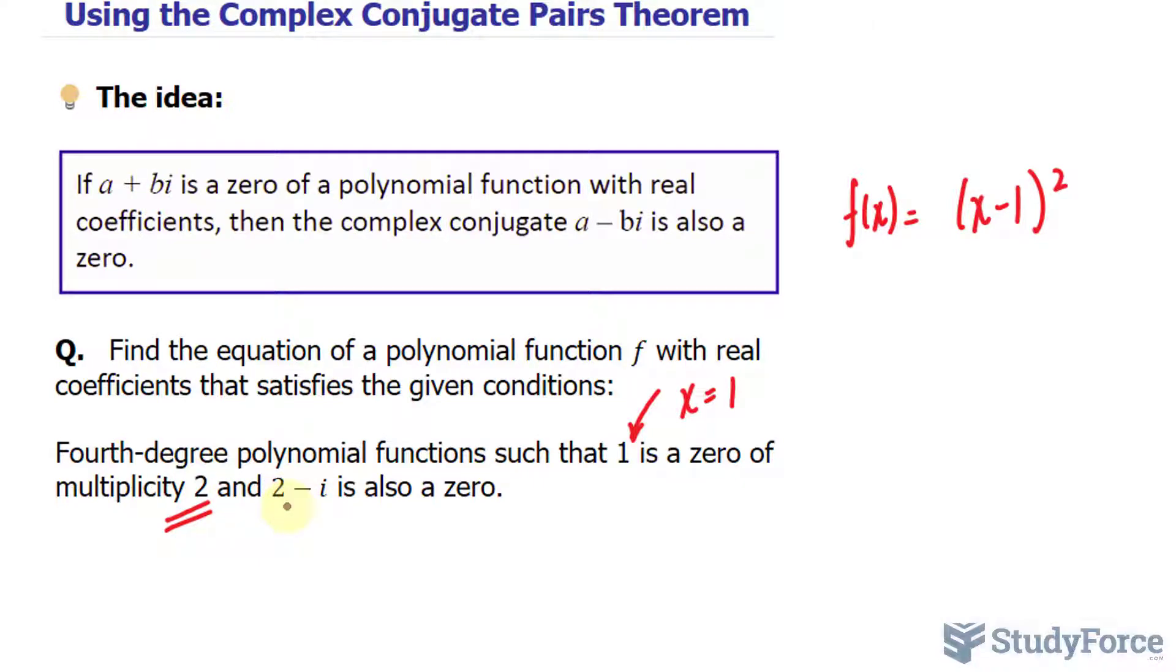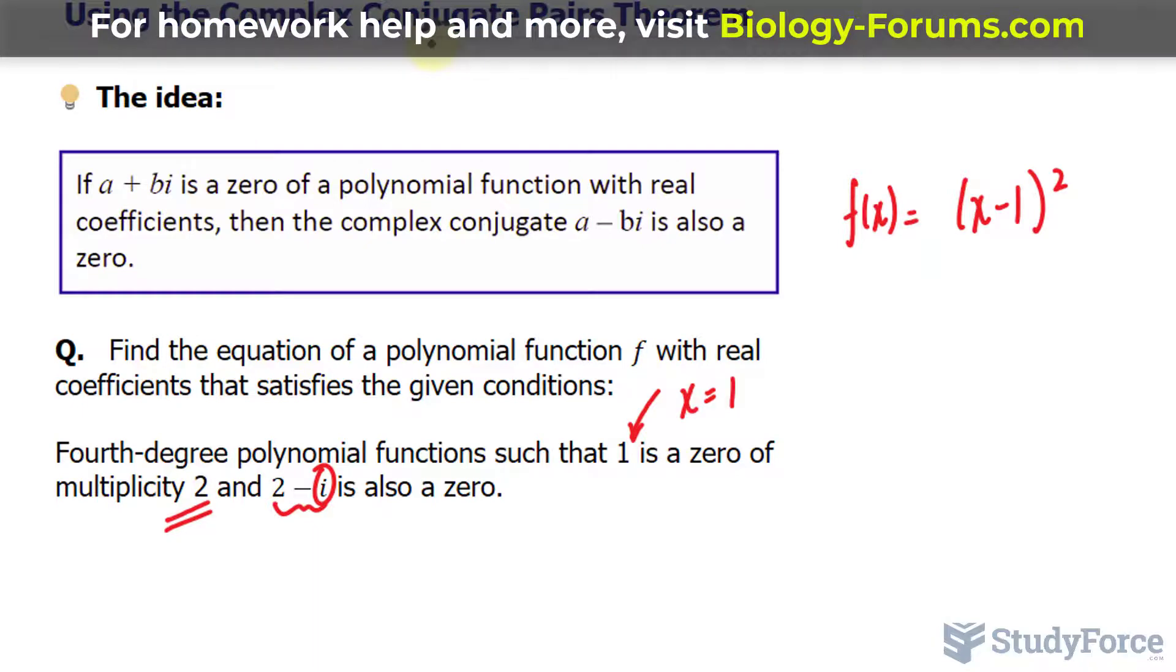And two minus i is also a zero. So that's a complex number with that imaginary term. And as mentioned in the complex conjugate pairs theorem, we have to have the conjugate of this, which is two plus i.